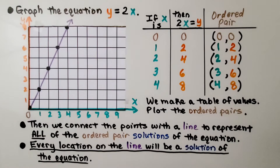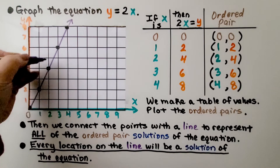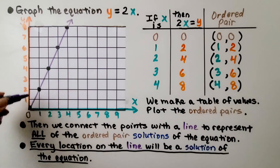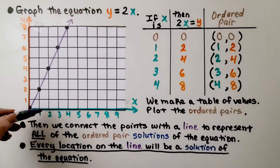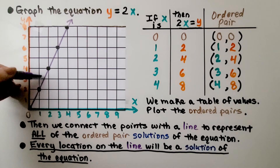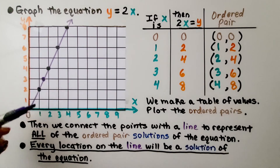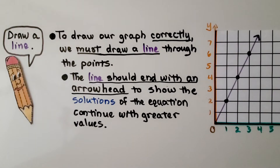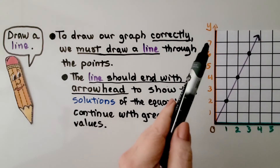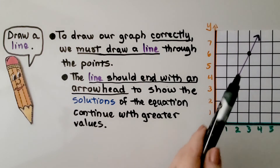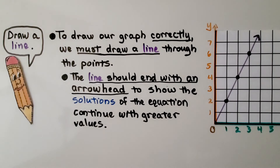Every location on the line will be a solution of this equation — not just where we plotted the points, but even in between. This would be a solution, this would be a solution, even right here would be a solution. Any place on this line is a solution to y equals 2x. For example, the ordered pair (1.5, 3): 1 and a half times 2 does equal 3. To draw our graph correctly, the line must end with an arrowhead to show the solutions continue with greater values. If our graph were bigger, our x and y values could continue on, so the arrowhead shows the solutions keep going.